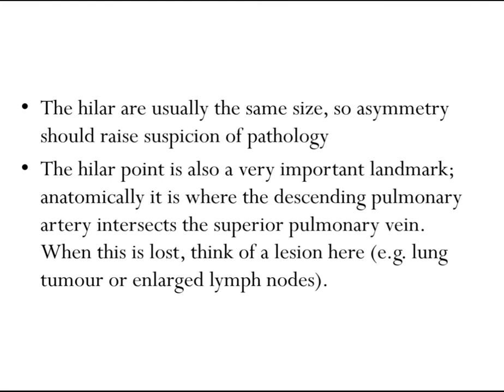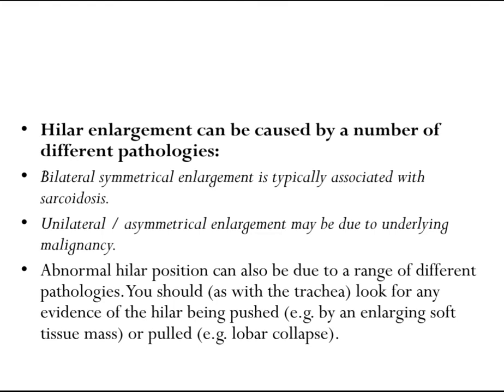The hila are usually the same size, so asymmetry should raise suspicion of pathology. The hilar point is an important anatomical landmark where the descending pulmonary artery intersects the superior pulmonary vein — when this is lost, think of a lesion such as a lung tumor or enlarged lymph nodes. Hilar enlargement can be caused by various pathologies: bilateral symmetrical enlargement is typically associated with sarcoidosis, while unilateral asymmetrical enlargement may be due to underlying malignancy. Abnormal hilar position can also result from a soft tissue mass or lobar collapse.